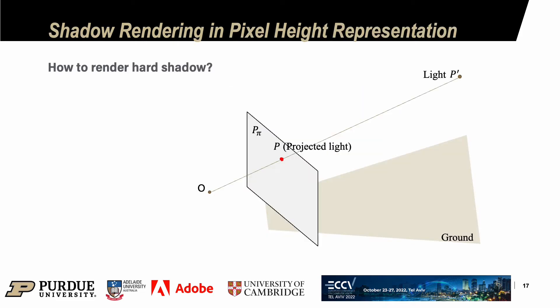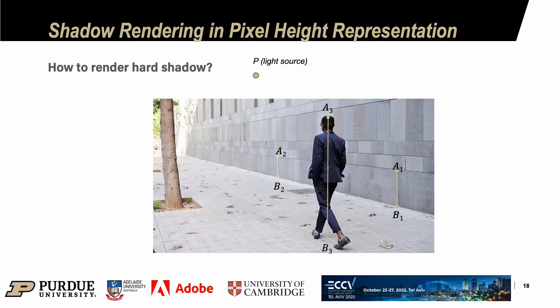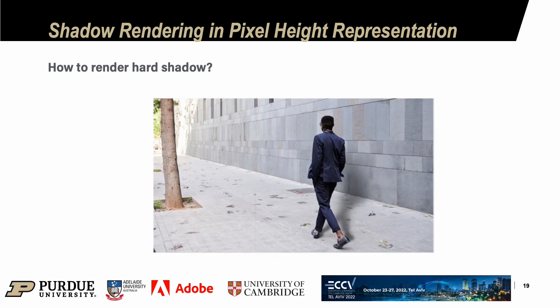How do we render hard shadows in the pixel height representation? Given a light source p prime, an occluder a prime, and a point in space c prime, the three points will be projected onto the image plane. The trapezoid constructed by the 3D height will be preserved as a trapezoid after projection under the no-pitch assumption. Using this property, if we have the pixel height of the cutout and background, we can test if a point is occluded by the cutout. For a projected light source p, an occluder a3, and a point s on the shadow receiver, if we can construct a trapezoid in image space, then s is in shadow. In this way, we can render a shadow in the pixel height space.